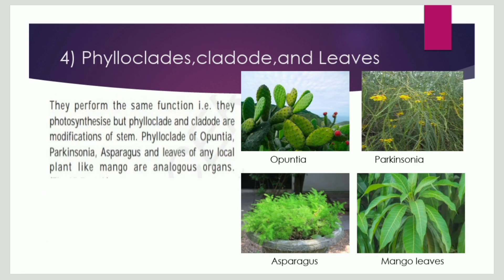Phylloclades, cladode and leaves perform the same function of photosynthesis, but phylloclades and cladode are modifications of stem. Generally the function of photosynthesis is performed by the leaf, but here photosynthesis is performed by the stem.